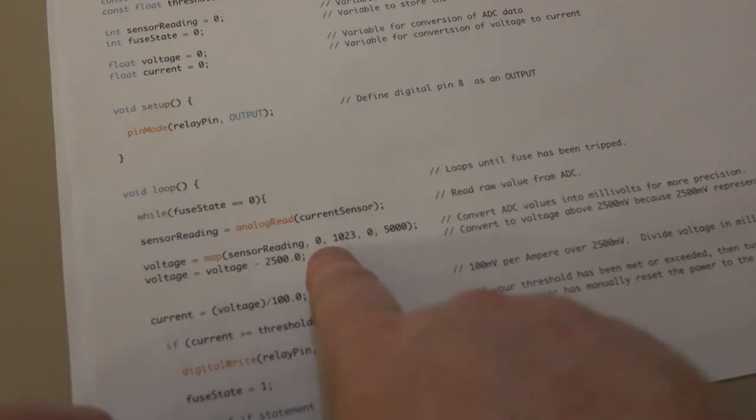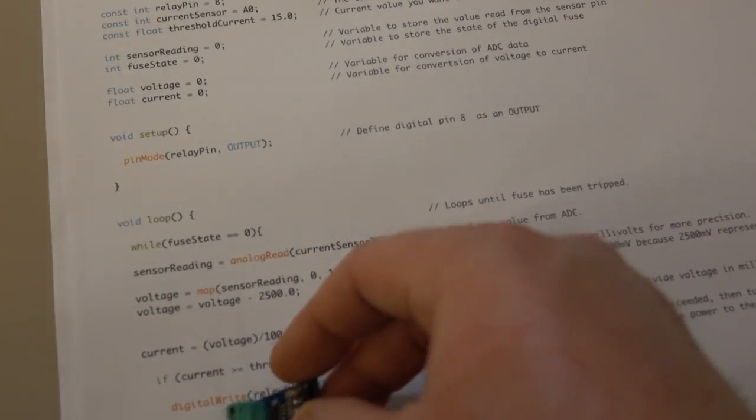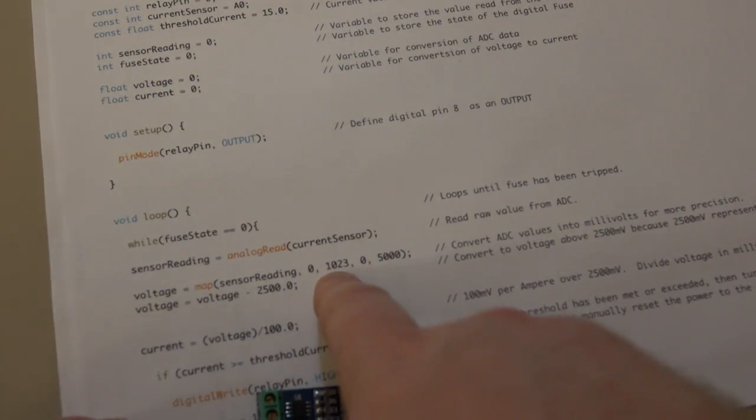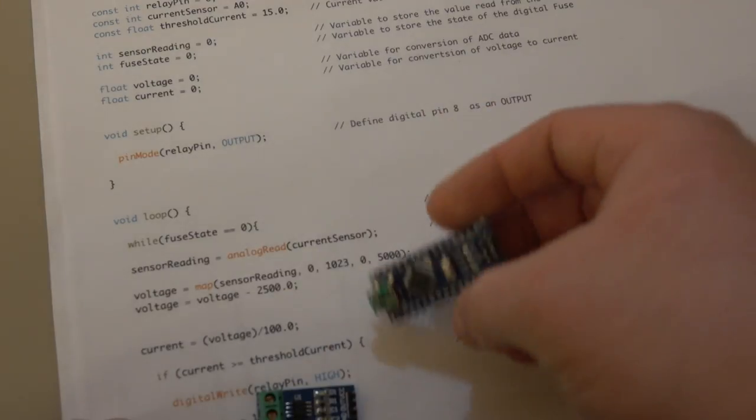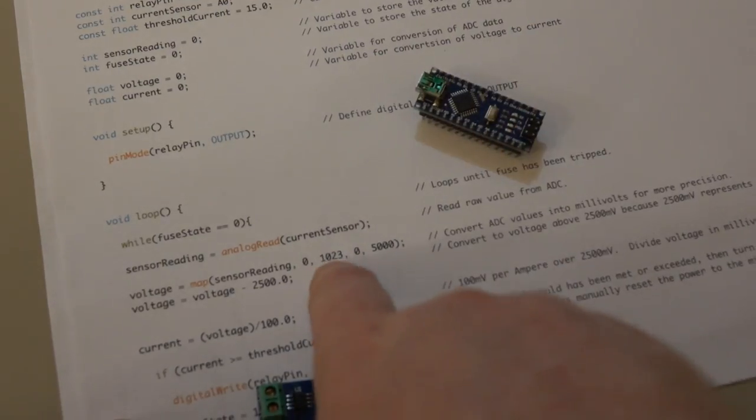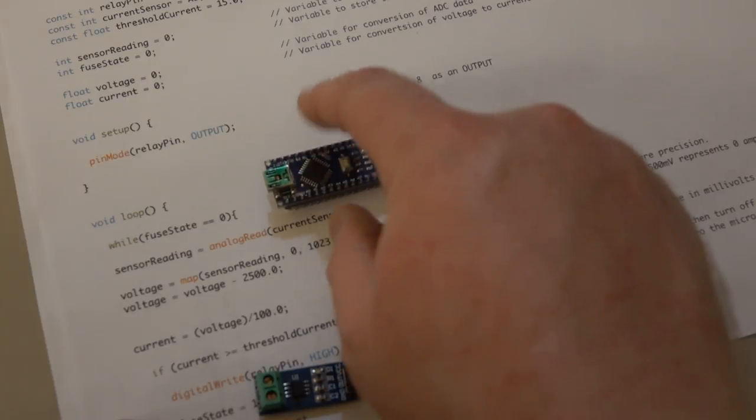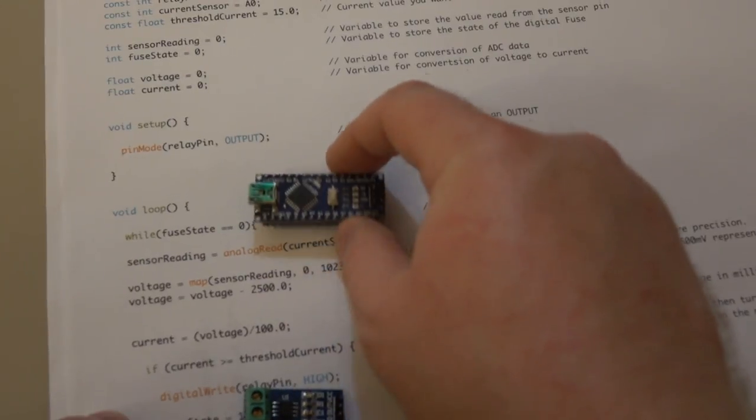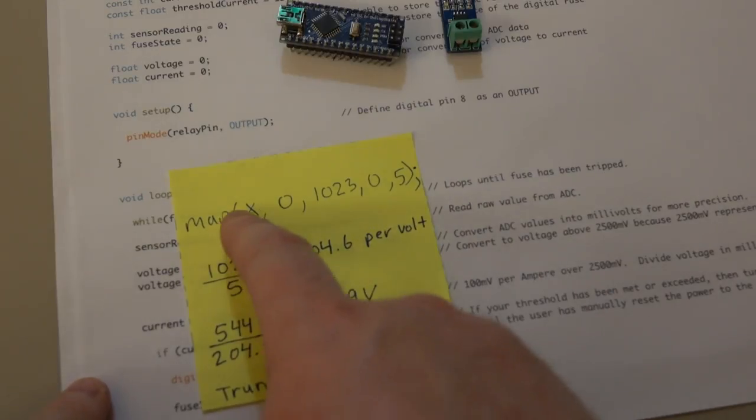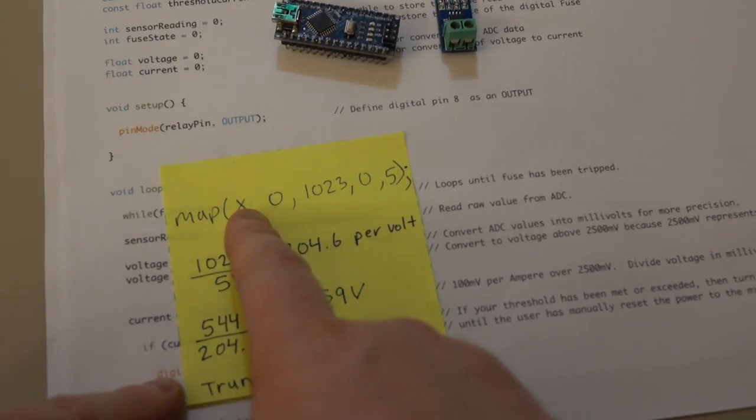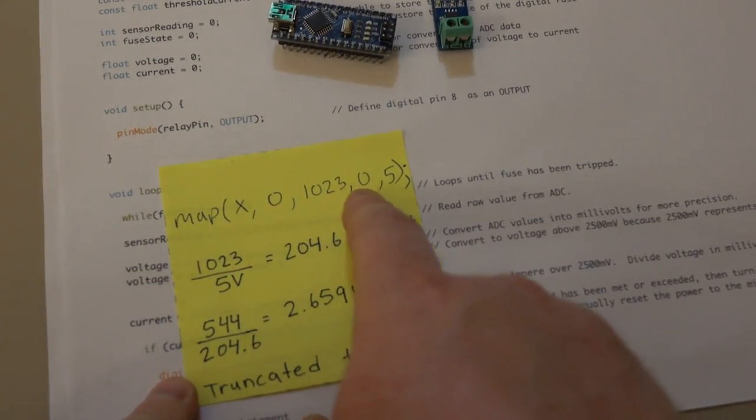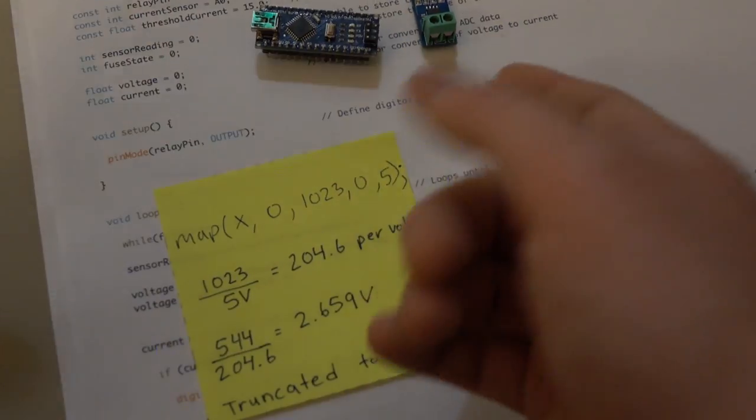Remember, if you had an 8-bit analog to digital converter, this would be 0 to 255. And if you had a 16-bit, that would be also different. So it depends on the resolution of your analog to digital converter. So let's say we mapped a value X, some variable, from 0 to 1023 to 0 and 5.